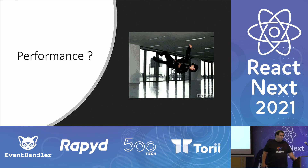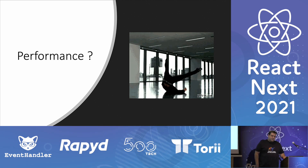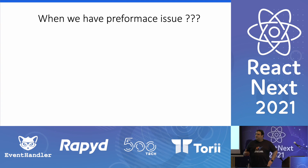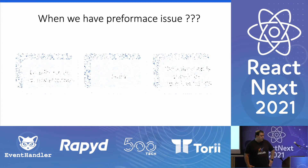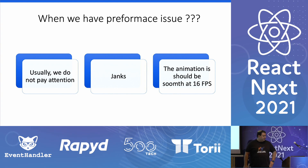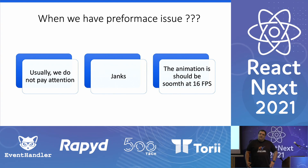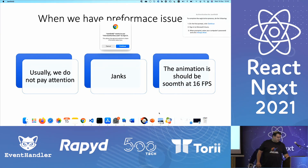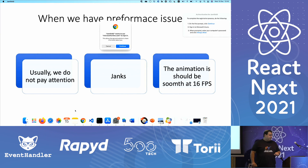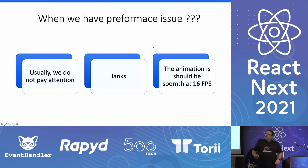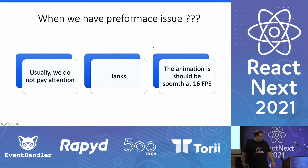If we have performance issues, why is it so important to us? First of all, let's talk about how performance issues were measured in the past versus current days. In the past, Google measured performance by checking when the DOM was loaded. But in the last few years, they presented the Google performance metrics, talking about when the user has interaction with our page.